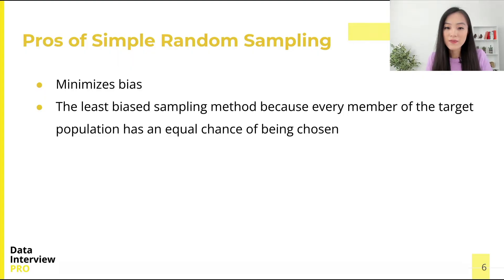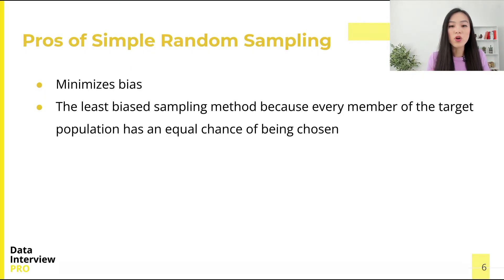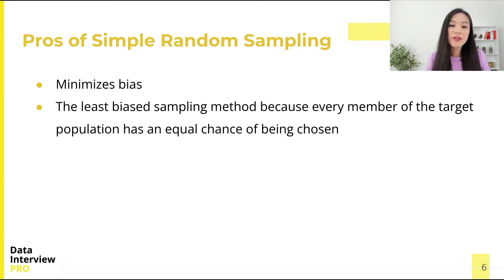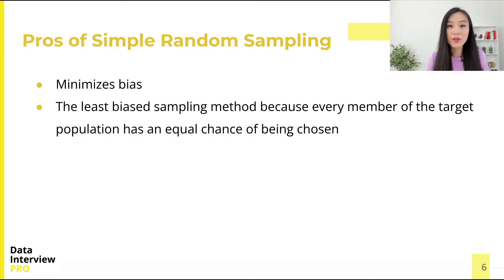There are some advantages of simple random sampling. First, it minimizes bias. It is the least biased sampling method because every member of the target population has an equal chance of being chosen. Therefore, it is likely to have high internal and external validity. Like any sampling technique, there is room for error, but this method is intended to provide an unbiased sampling approach.